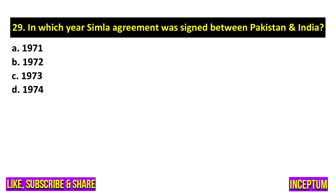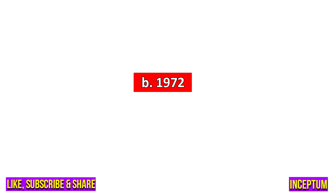Question number 29. In which year was the Shimla Agreement signed between Pakistan and India? In the options we have 1971, 1972, 1973, 1974. And the right one is option B, 1972.